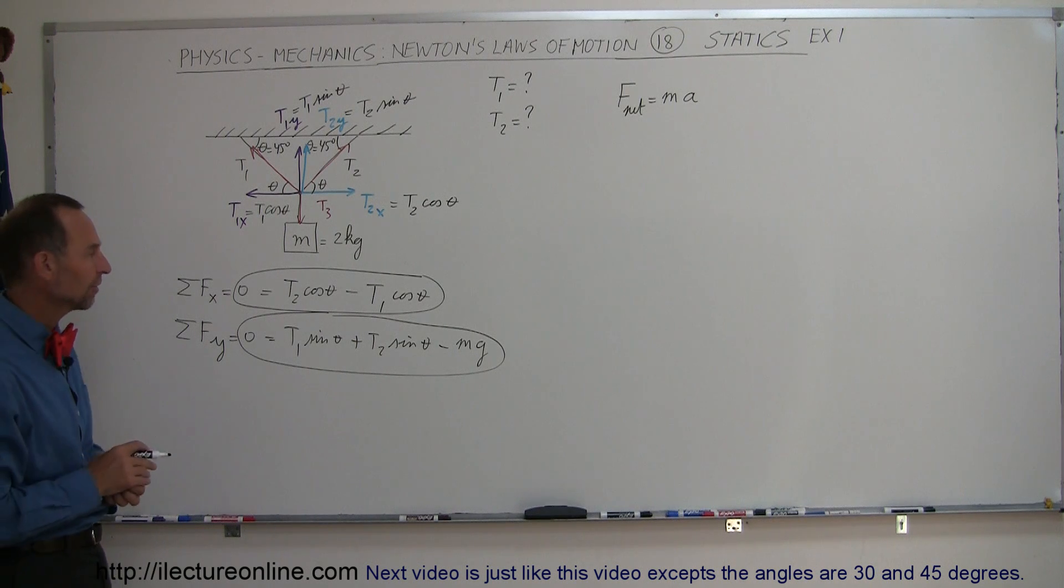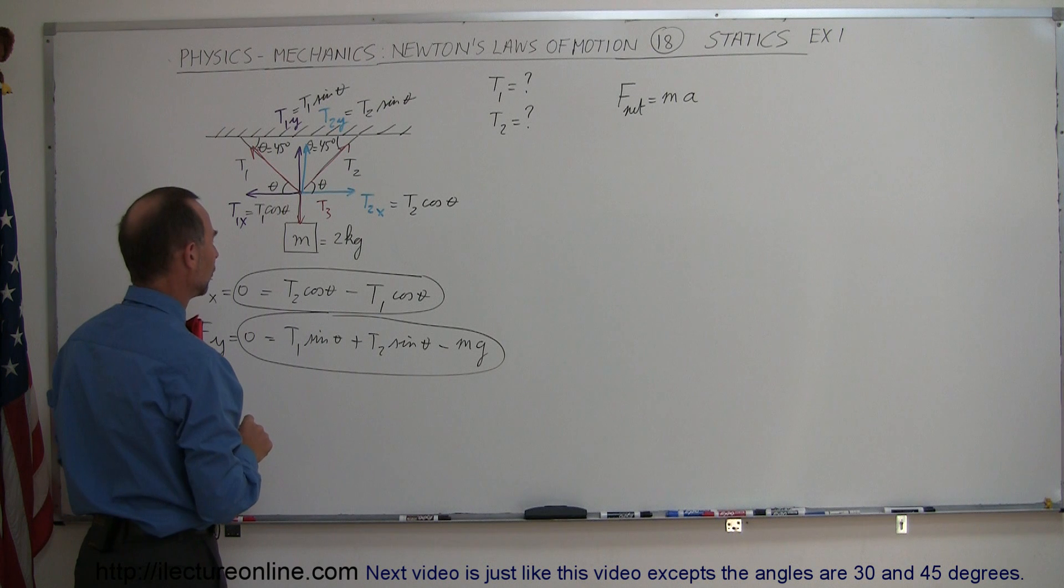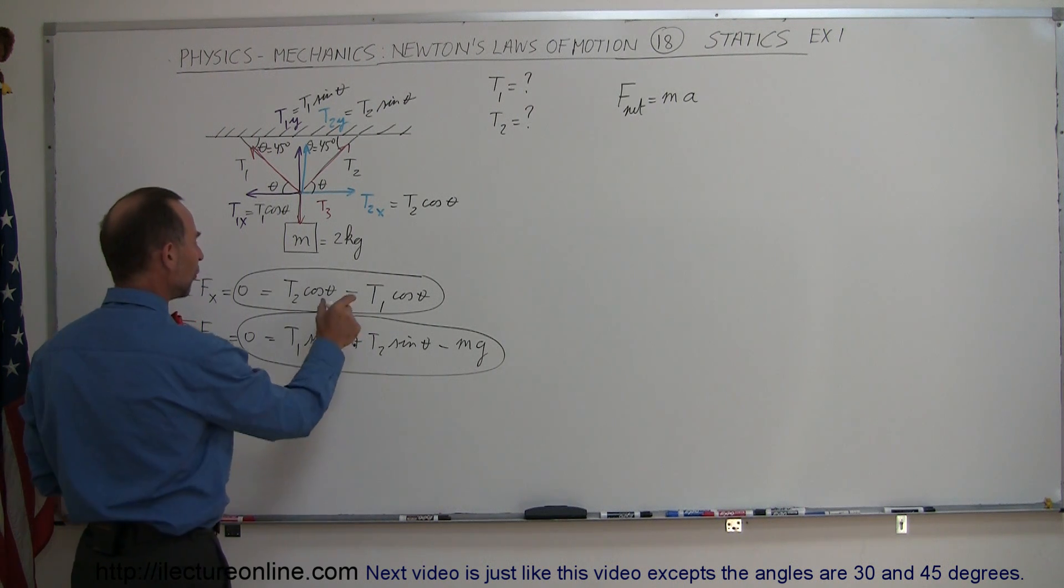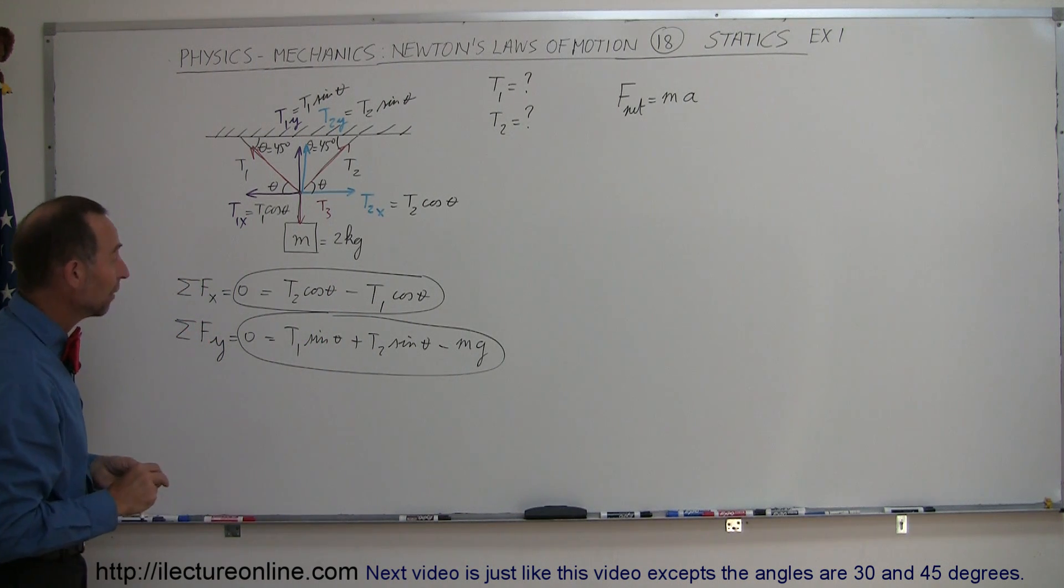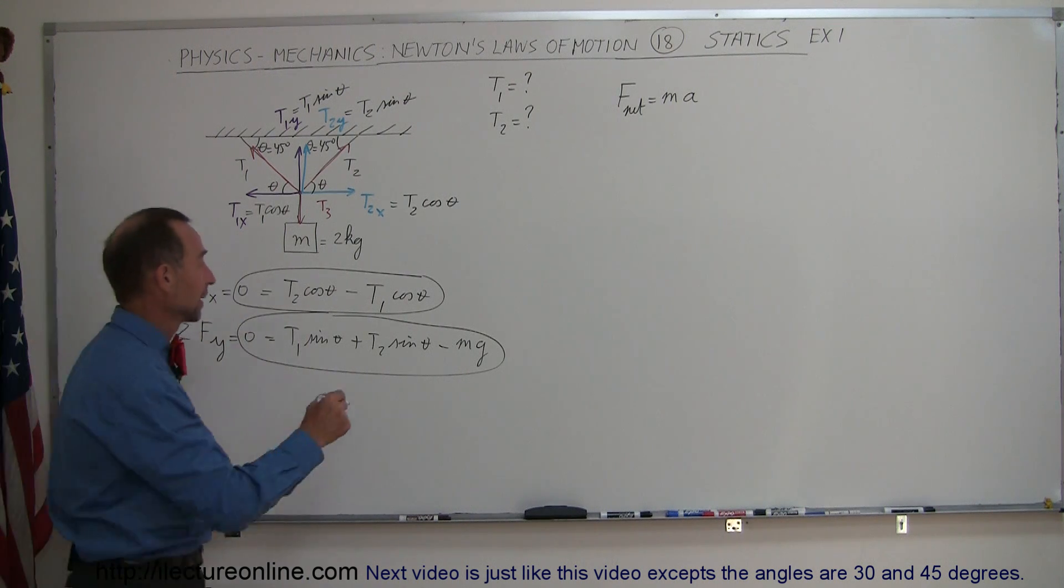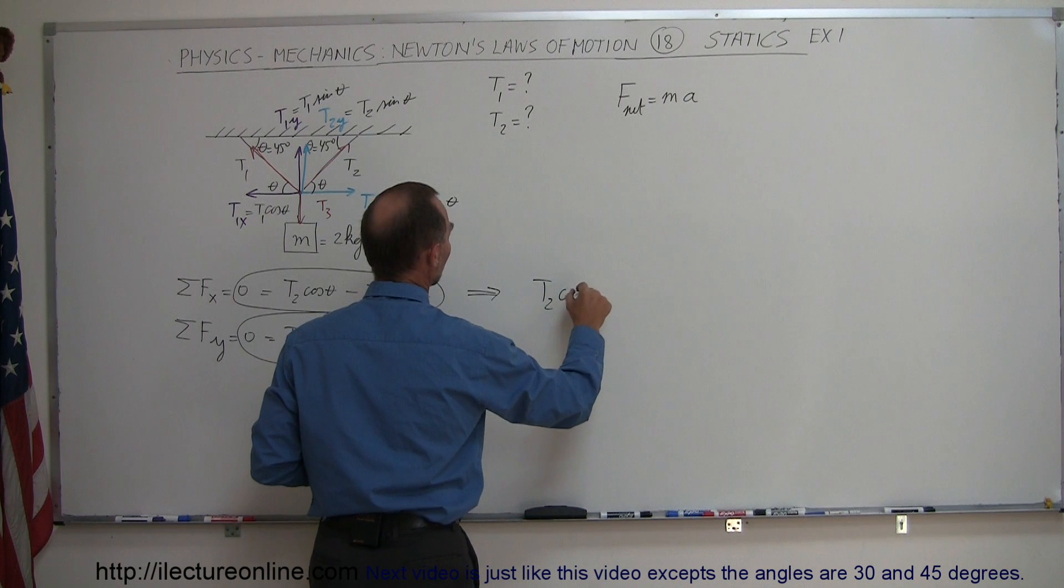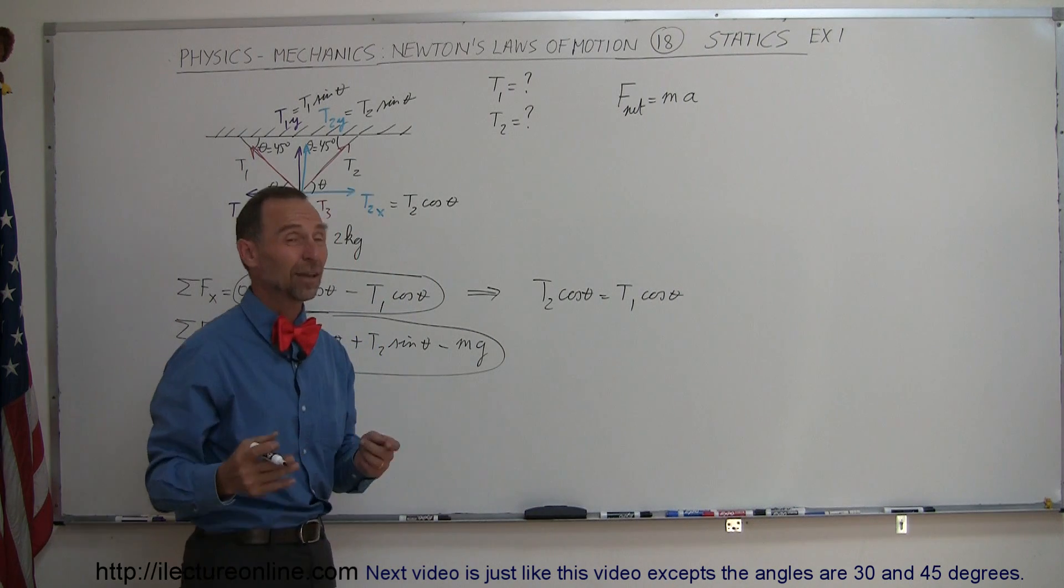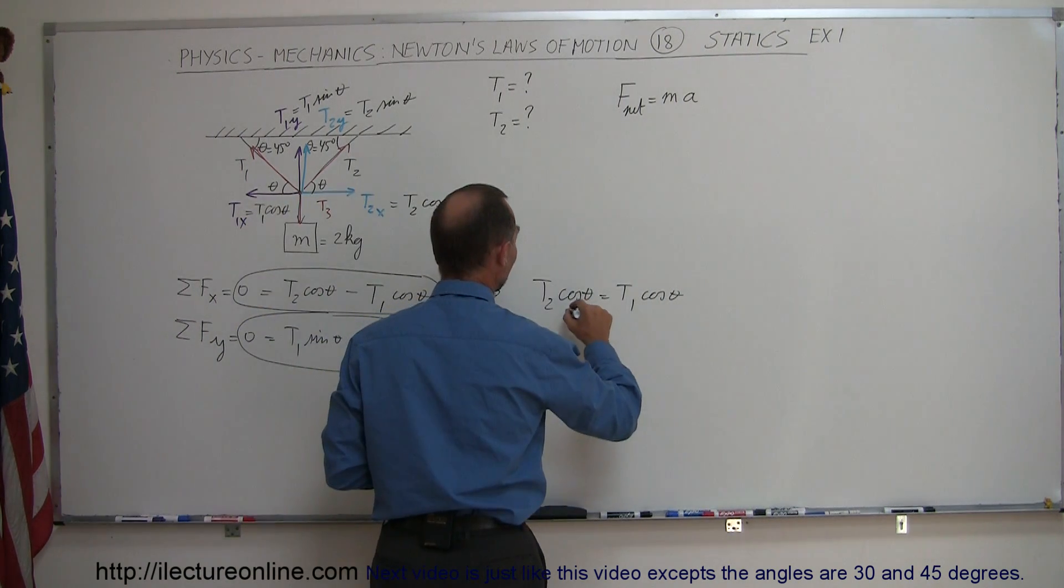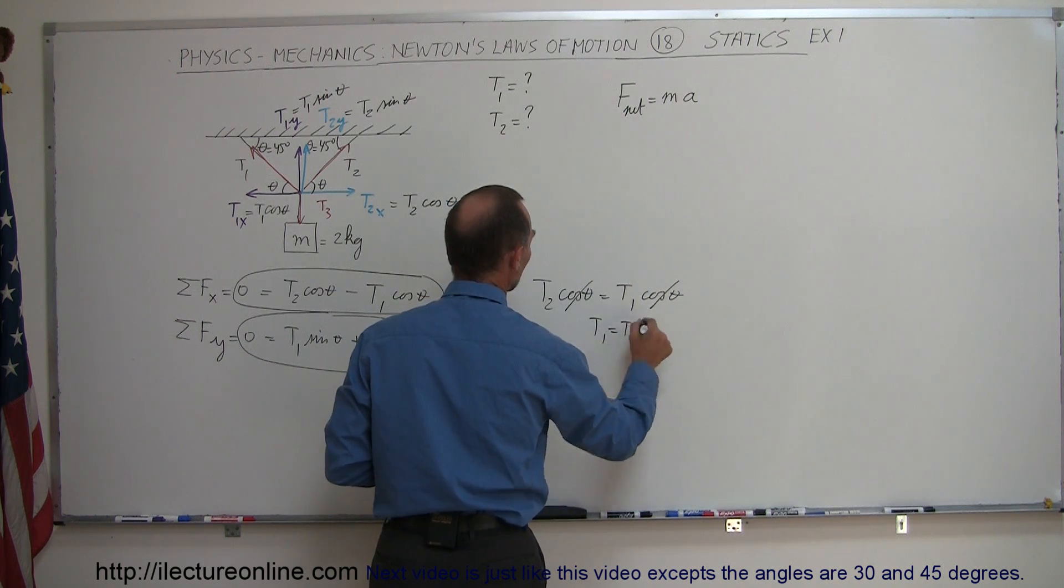The way you want to solve that now is use one of these equations and solve one of the tensions in terms of the other, and then plug it into the second equation to find each of the tensions. So we'll take our first equation. This means that T2 cosine of theta equals T1 cosine of theta, and notice that it's cosine of the same angle, so we can divide both sides by the cosine of theta, which means T1 equals T2.